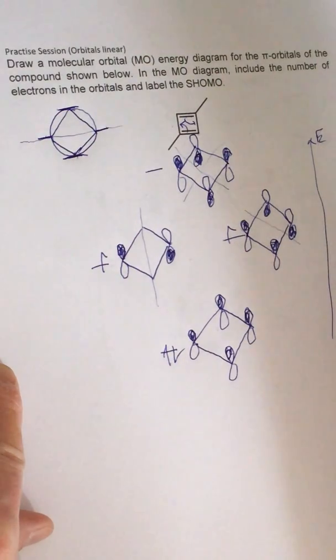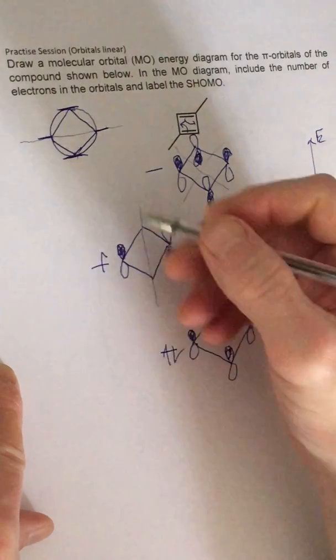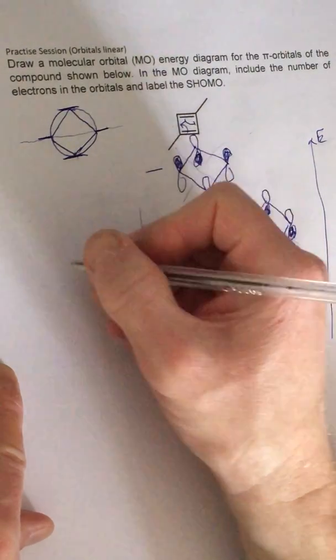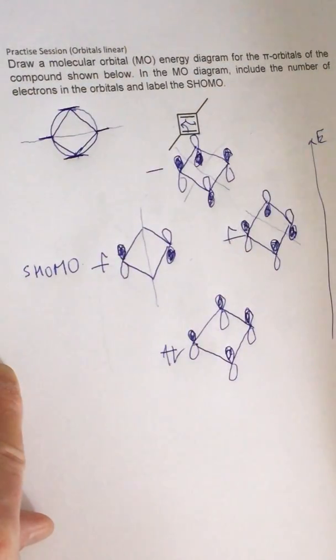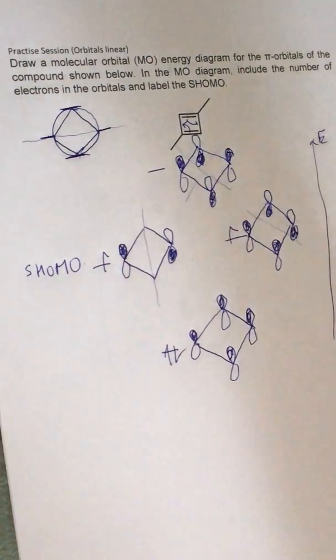Okay, and then it says label the SHOMO, so the SHOMO is singly occupied molecular orbital, so that's going to be the SHOMO. Okay, that's it.